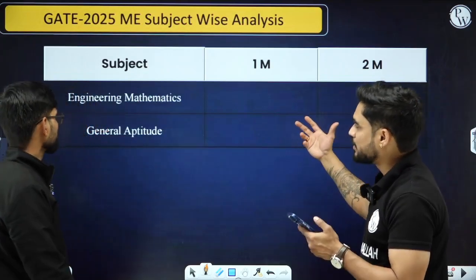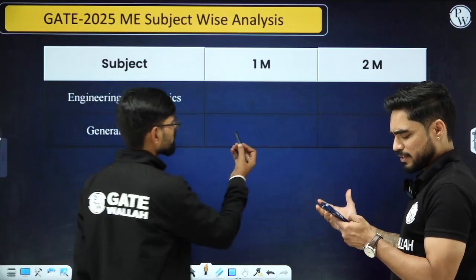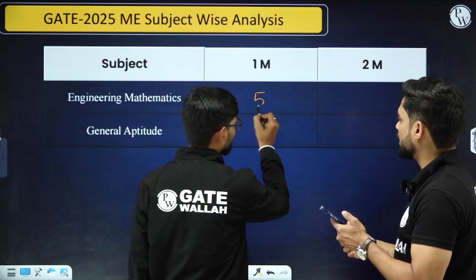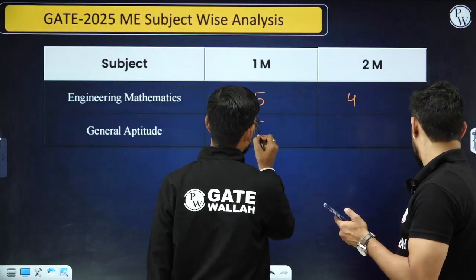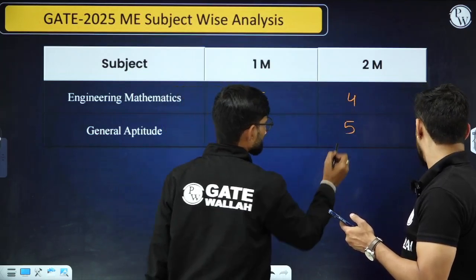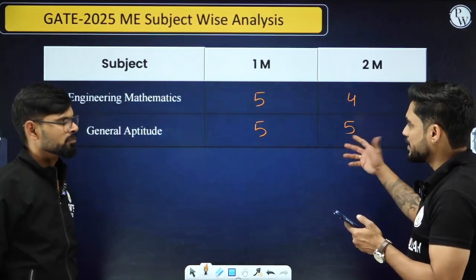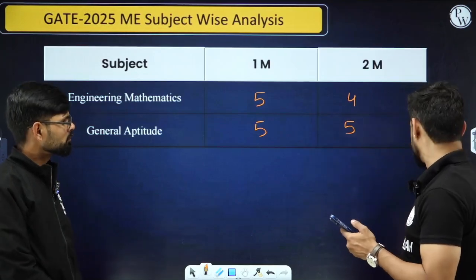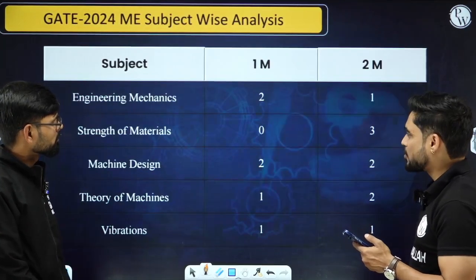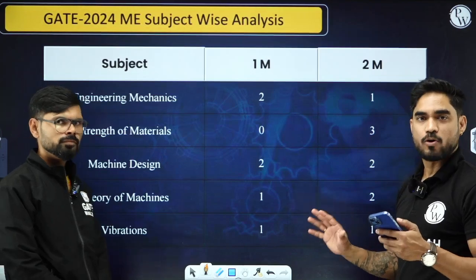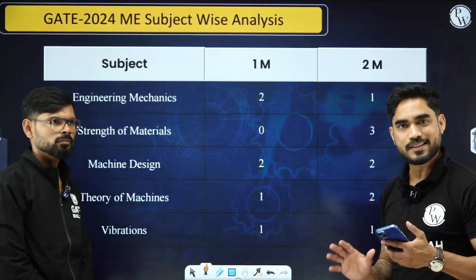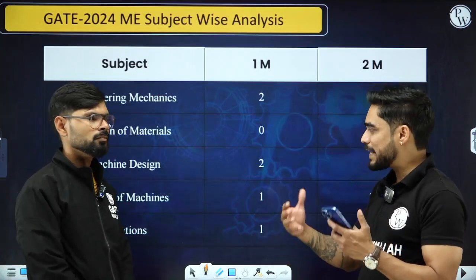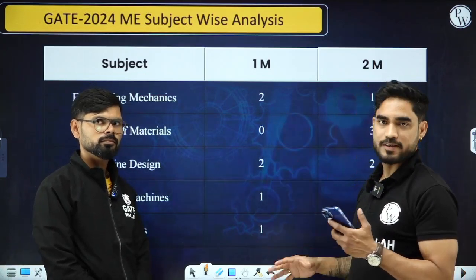Now let's talk about engineering mathematics and general aptitude — it is almost exactly the same as last year. Mathematics had five one-mark and four two-mark questions, and aptitude had five one-mark and five two-mark questions. This weightage never changes; it is almost the same every year. The overall weightage is not drastically changed from last year, so people preparing for next year can learn from this and decide which subjects to prepare first.